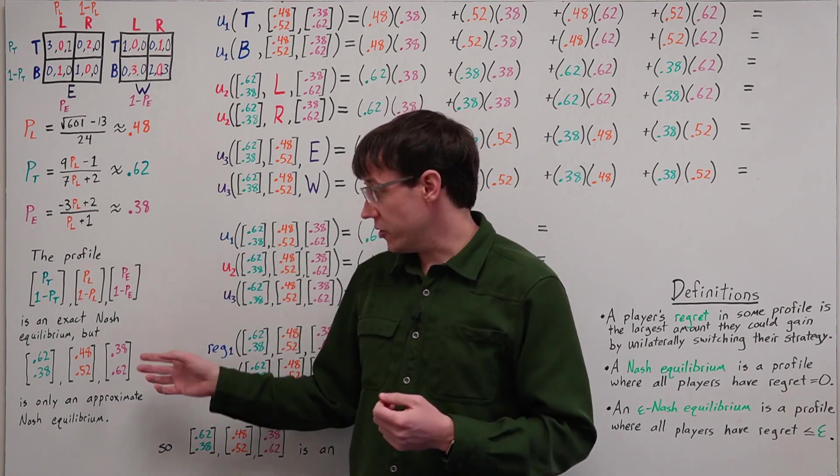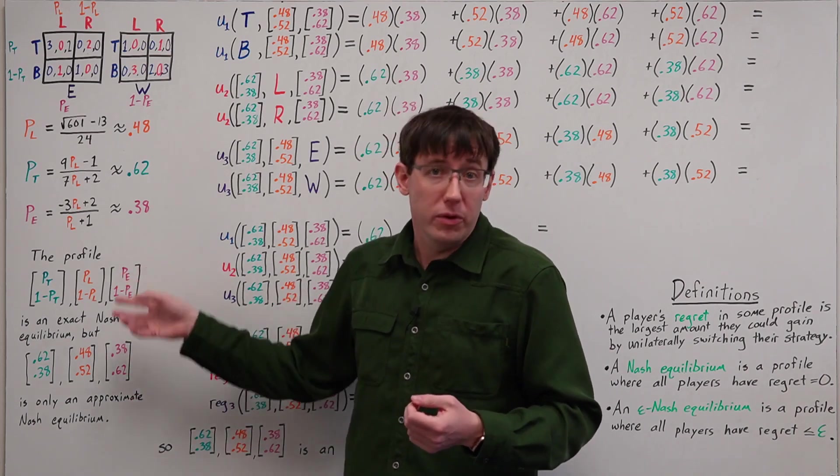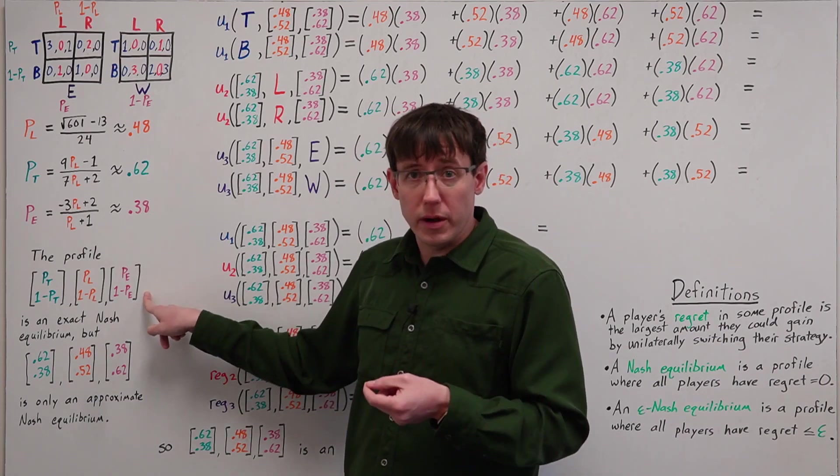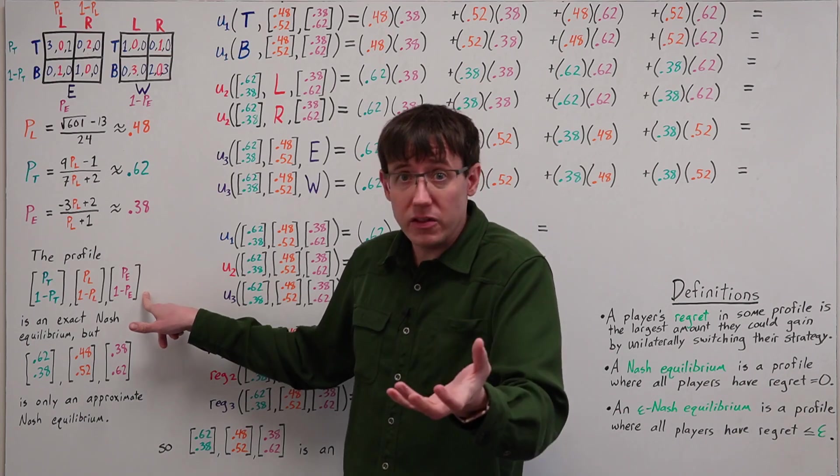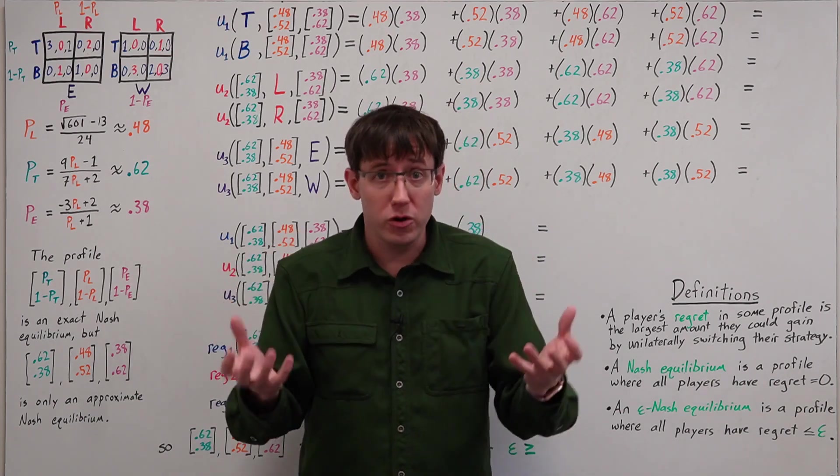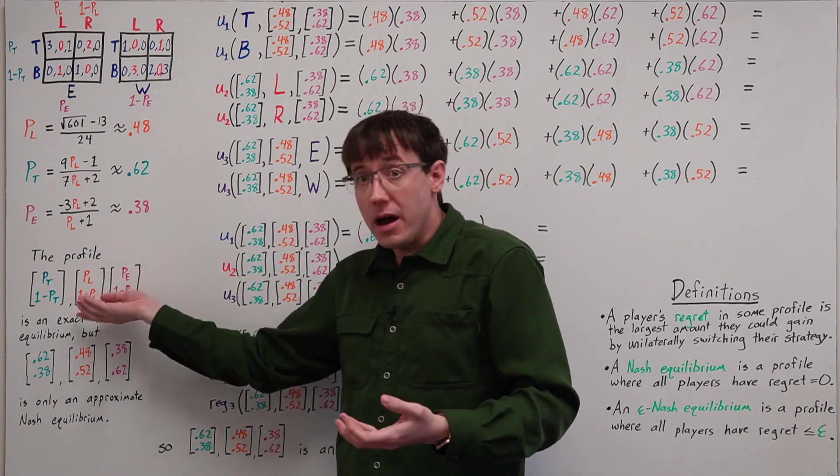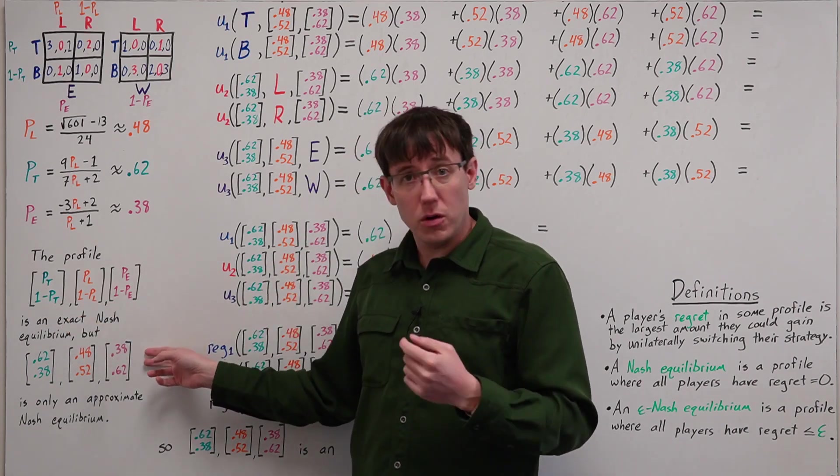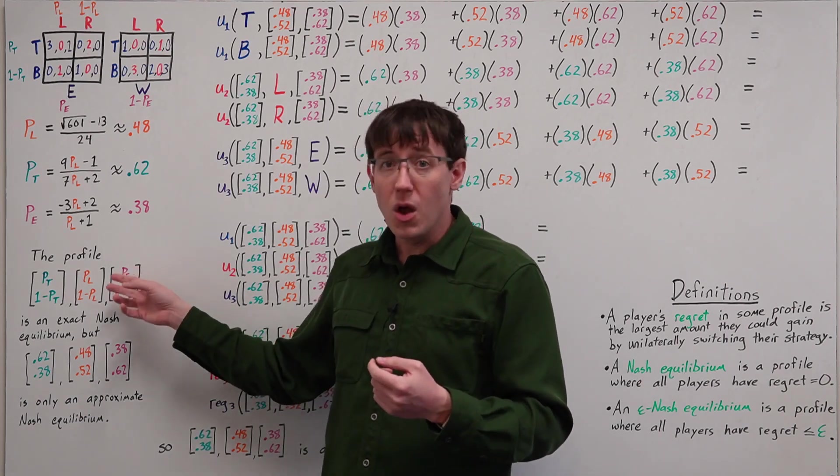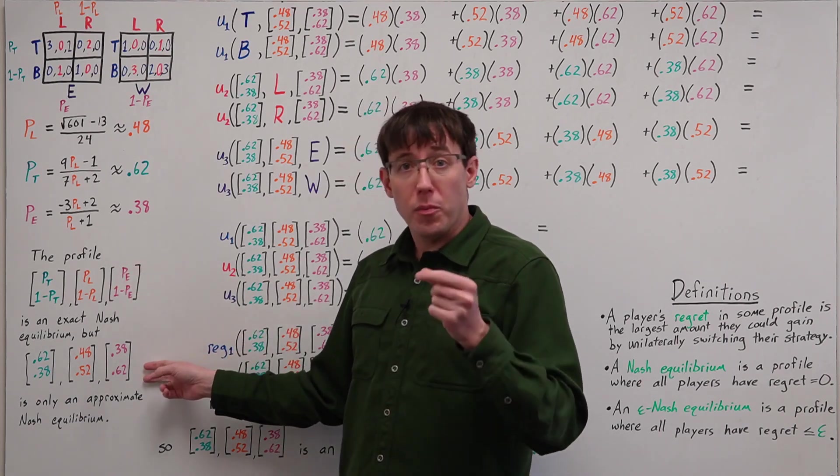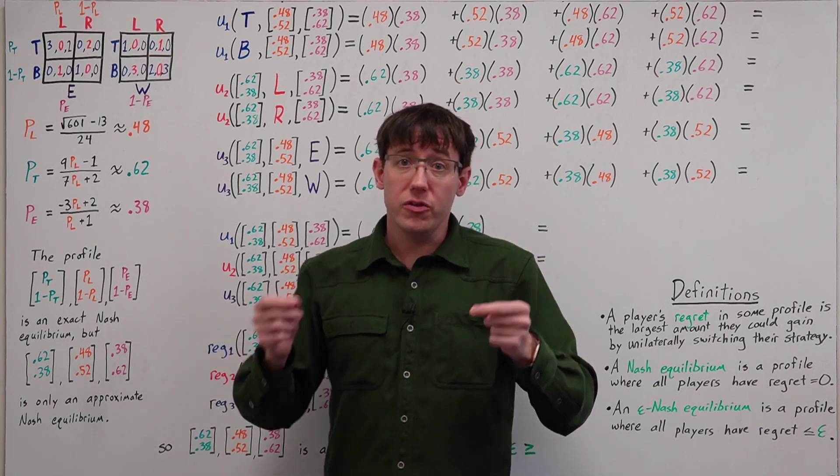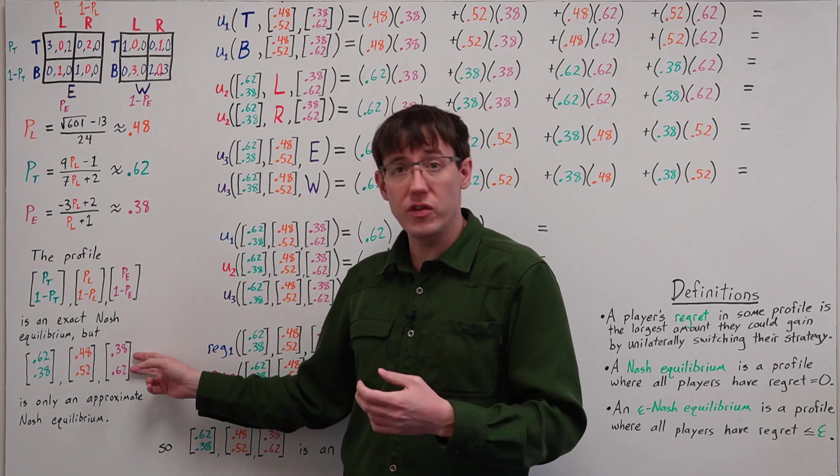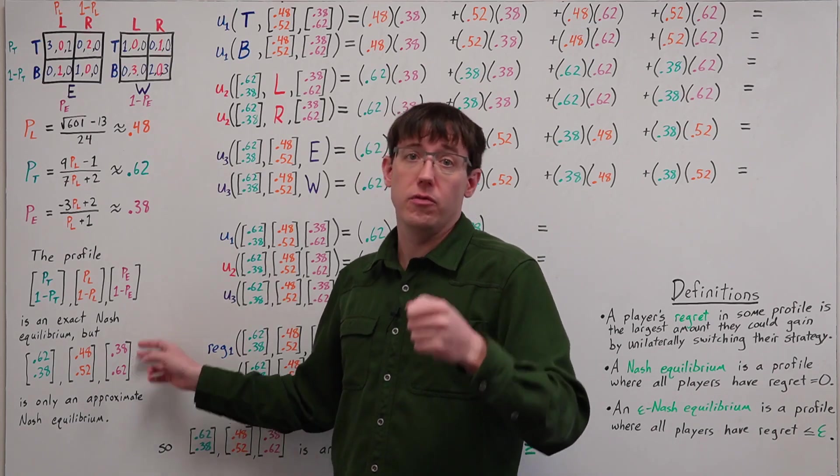Our first thought might be to measure how far off the equilibrium probabilities are, but that would require us to know the exact equilibrium. And if our approach to finding the equilibria is to run a numerical algorithm, we may not know this in general. So instead of measuring how close our probabilities are to the equilibrium, we can think about, for the profile we have found, what are the incentives?